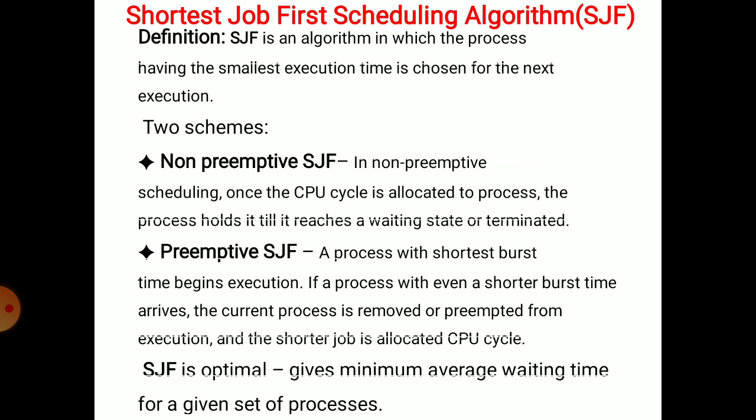First, we need to define the Shortest Job First Scheduling Algorithm. In this algorithm, the process having the smallest execution time is chosen for the next execution. That means we select the process requesting the shortest CPU time, so that process is selected first for execution.